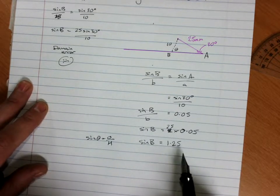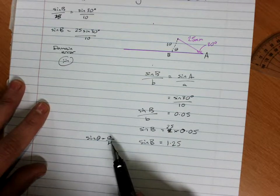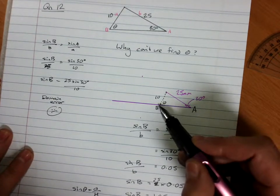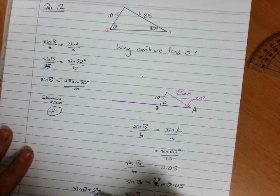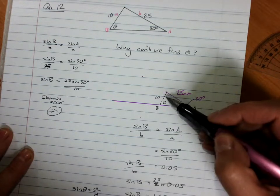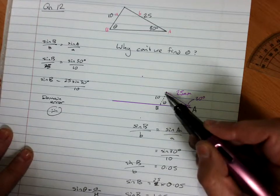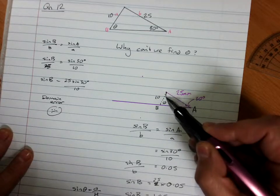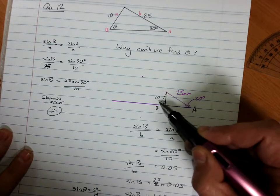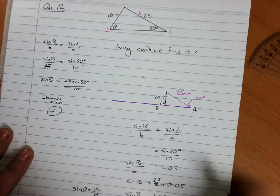If sine of the angle is more than 1, what it's saying is the hypotenuse is smaller than the opposite. If we look back here, that's exactly what's happening. We would have to have an opposite that was longer than 10, the hypotenuse, in order to be able to construct this triangle.